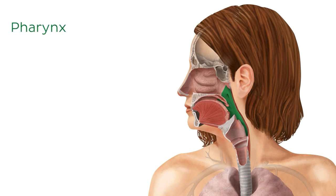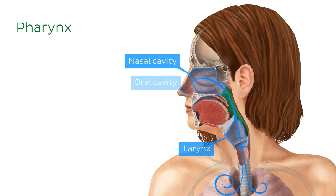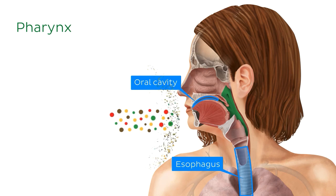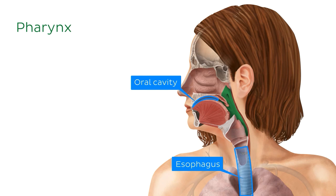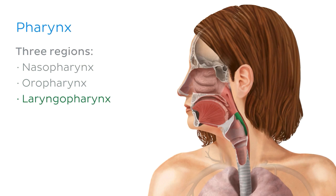Running behind the nasal cavity and the oral cavity is a five-centimeter-long tube that runs into the esophagus and the respiratory tract, known as the pharynx. It connects the nasal cavity to the larynx, allowing air to move in and out of the lungs. It also connects the oral cavity to the esophagus, enabling food and fluids to be passed from the oral cavity to the stomach for further digestion. The pharynx can be divided anatomically into three regions: the nasopharynx, the oropharynx, and the laryngopharynx. The pharynx is the final organ of the upper respiratory tract.